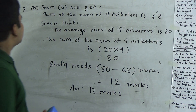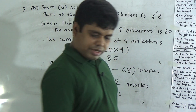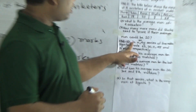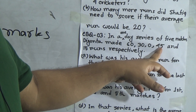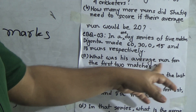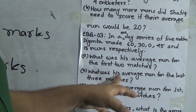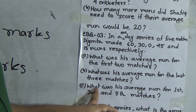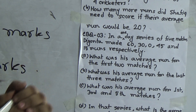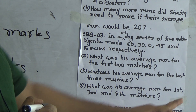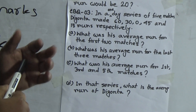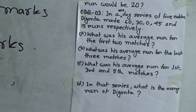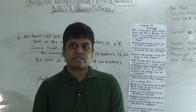I hope you have understood CBQ number 2. CBQ number 3 will be your SW. In a one-day series of 5 matches, Digonto made 60, 30, 0, 45 and 15 runs respectively. Questions: A — what was his average run for the first 2 matches? B — what was his average run for the last 3 matches? C — what was his average run for the first, third and fifth matches? D — what is his average run in the series? This is similar to question number 1 — I hope you can solve this easily by yourself.